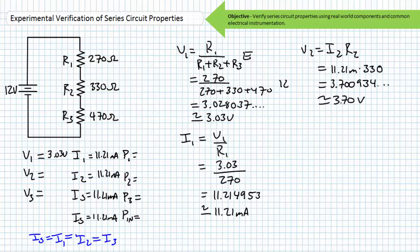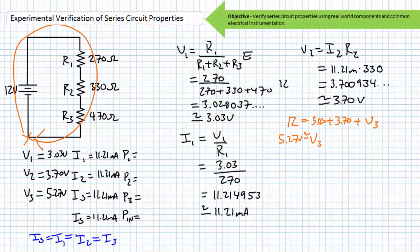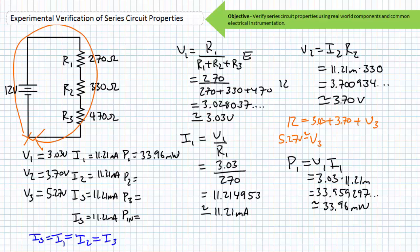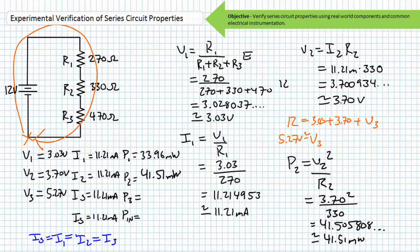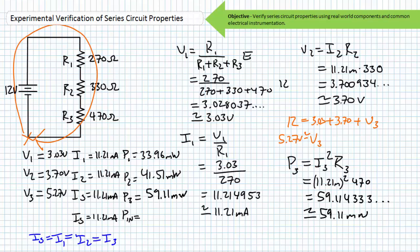Since we've spent our Ohm's law allotment, we're left with Kirchhoff's voltage law. Performing a KVL analysis, we rise the supply voltage E, fall V1, fall V2, fall V3. Our KVL equation is E equals V1 plus V2 plus V3. With E known and V1 and V2 solved, we find V3 to be approximately 5.27 volts. Now we calculate power: P1 equals V1 times I1, approximately 33.96 milliwatts; P2 equals V2 squared divided by R2, approximately 41.51 milliwatts; P3 equals I3 squared times R3, approximately 59.11 milliwatts.